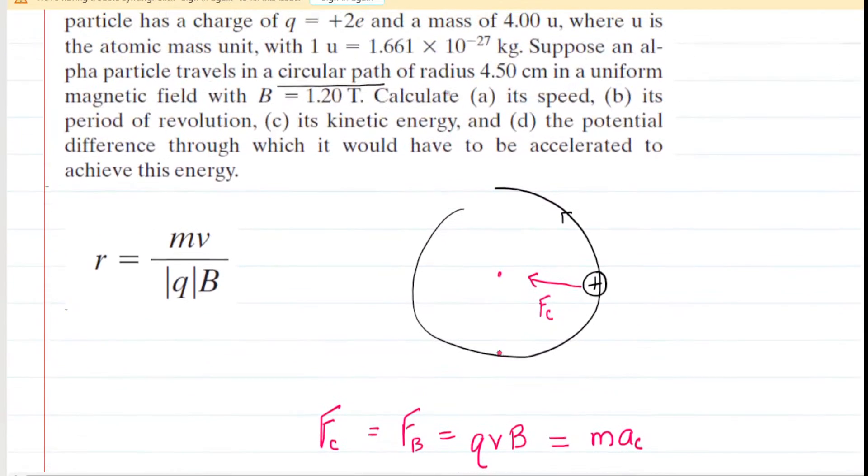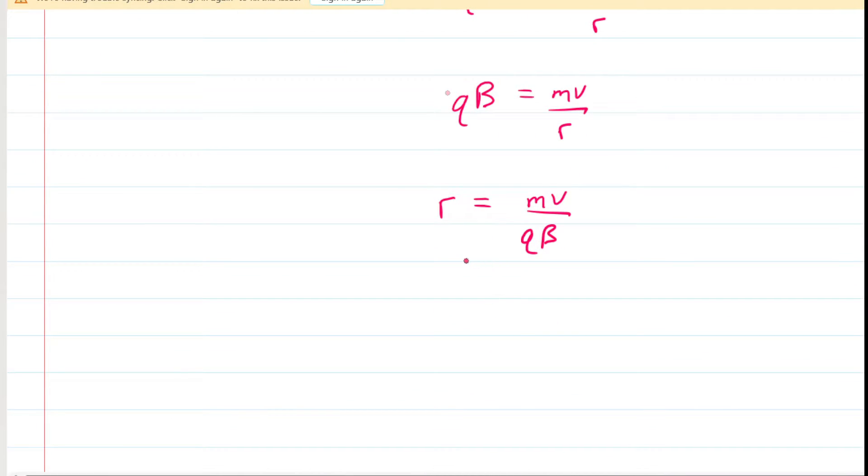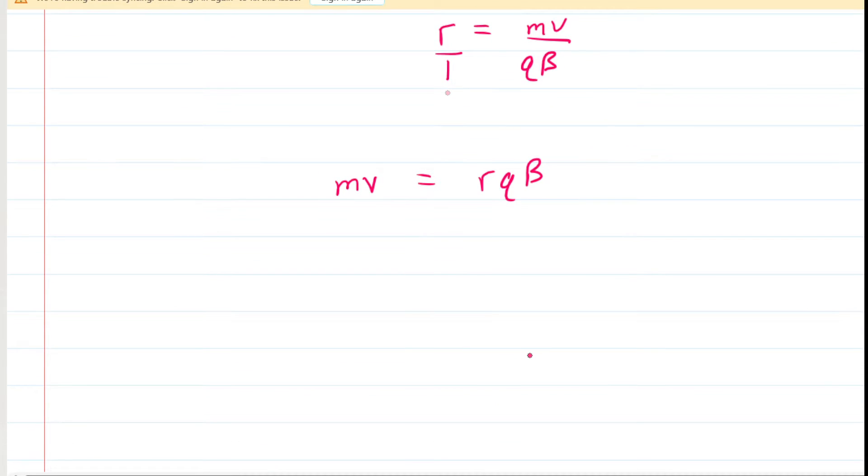But in fact, in Part A, we need to calculate the speed of this charged particle. So we're going to solve this for speed. We're going to just cross-multiply. So MV times 1 is MV, and then we have RQB when we cross-multiply in the other direction. Then you divide both sides by the mass. So now you have the speed is equal to R times Q times B divided by the mass of the alpha particle. Now, these values are known: the radius was given, the magnetic field, the charge, and the mass.